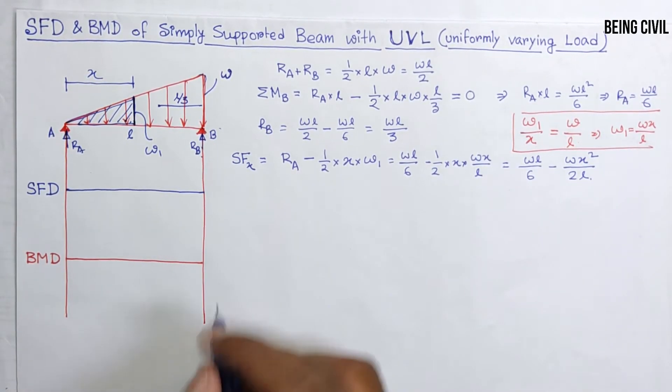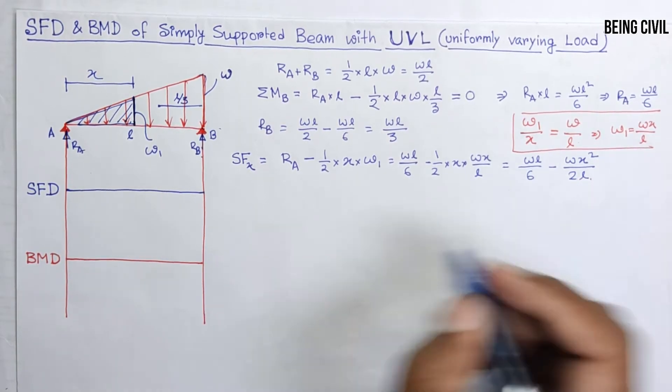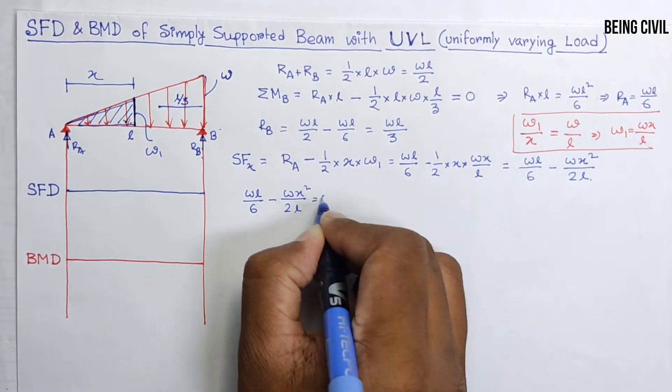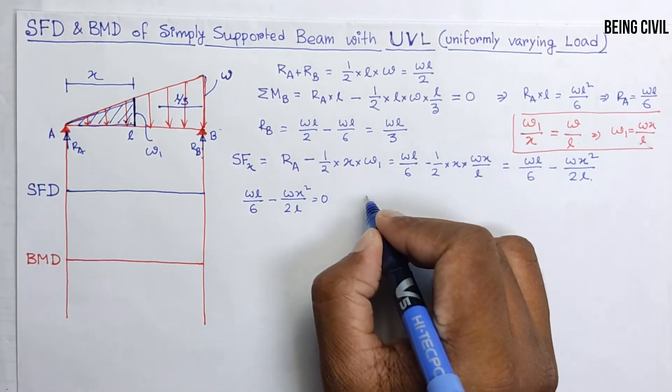To know where the shear force is 0, you have to equate this equation to 0. From here you can get X equals L by root 3, so it is 0.577L.